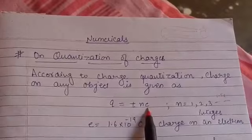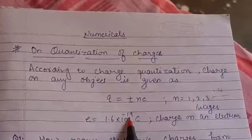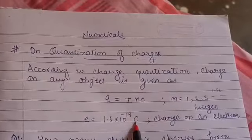Next E. E is the charge on an electron and its value is 1.6 into 10 raise to power minus 19 coulomb.